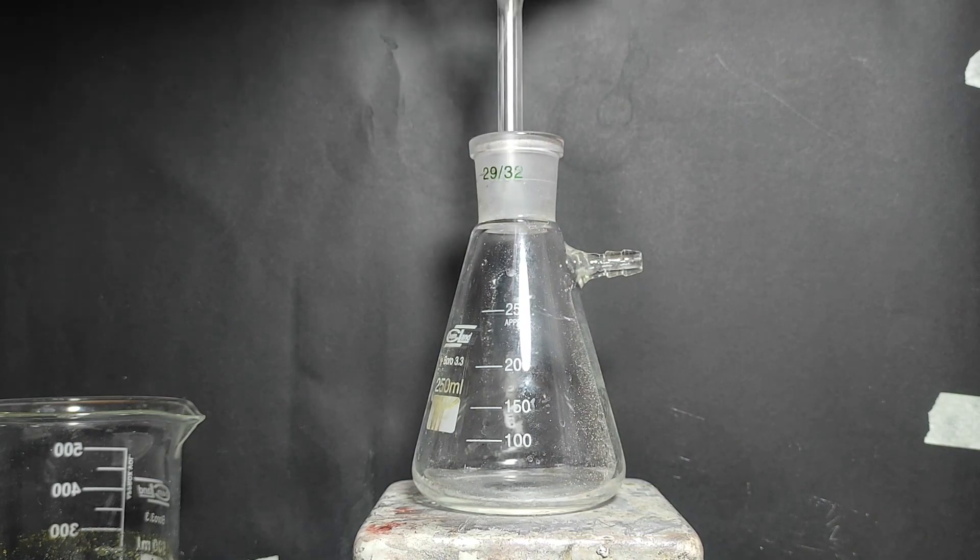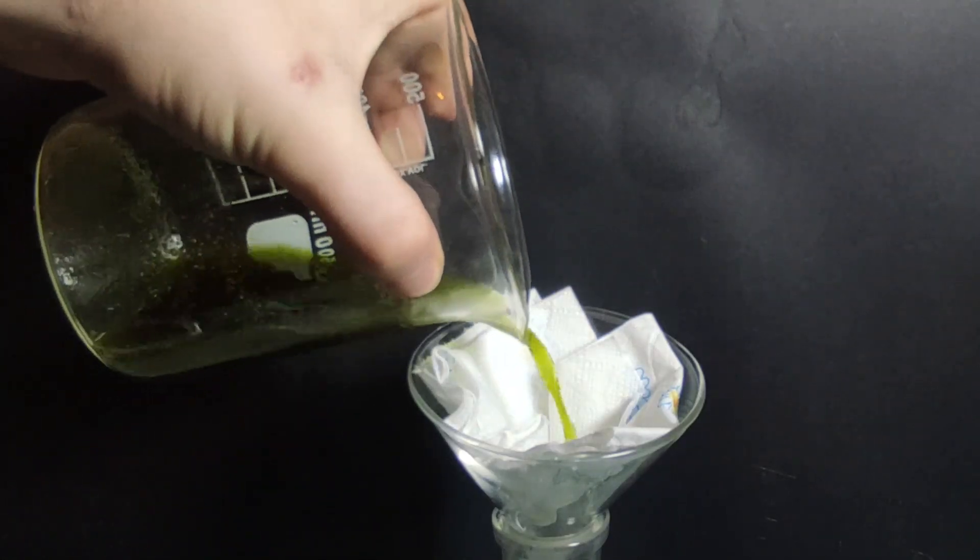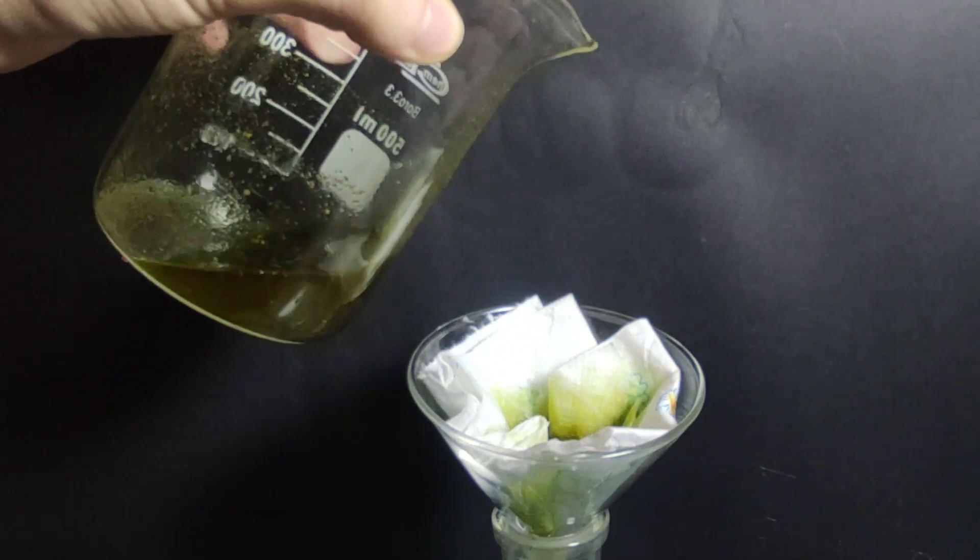Let's set up a filtration apparatus. The solution was poured through the three times stacked toilet paper. This step is done to remove the solid junk from the f***** extract.